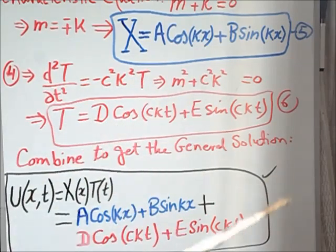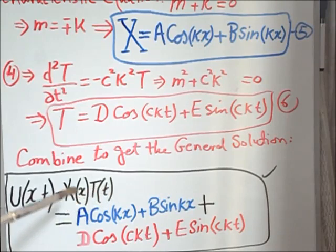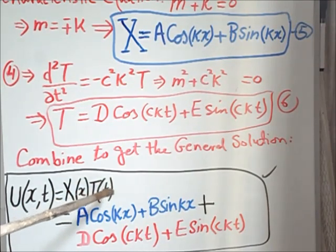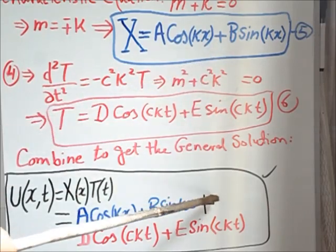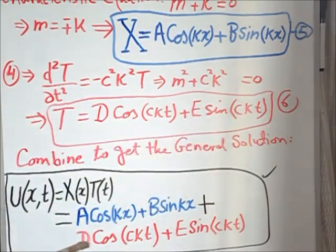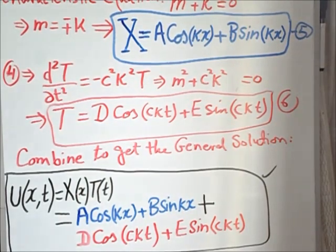Combining X and T, the general solution using separation of variables is: u(x,t) = [A cos(kx) + B sin(kx)] × [D cos(ckt) + E sin(ckt)]. This is the general solution we can use to solve wave equation problems of this form. We will also briefly look at the other two cases — C positive and C zero — to show they are not suitable.